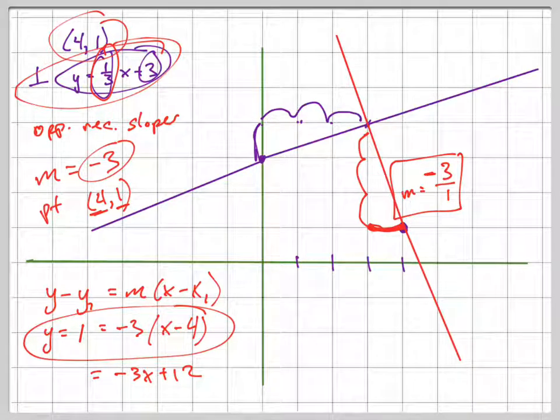Whoops, this should not be equals, this should be minus. Sorry about that. So y minus 1 equals that, which means y = -3x + 13.